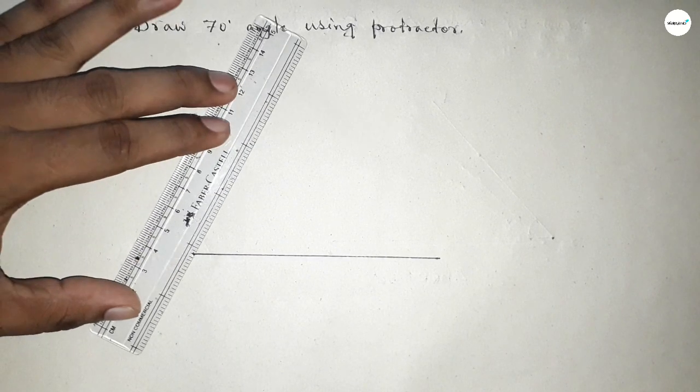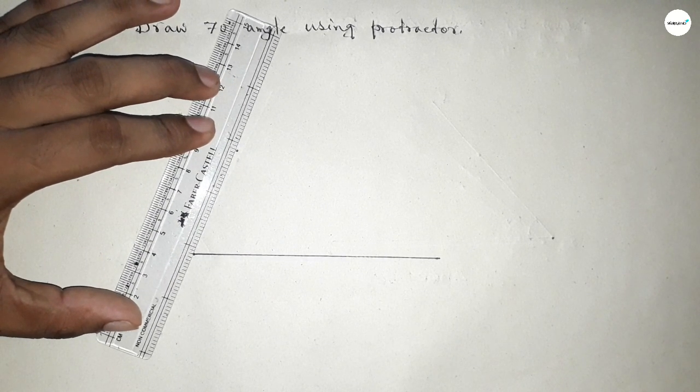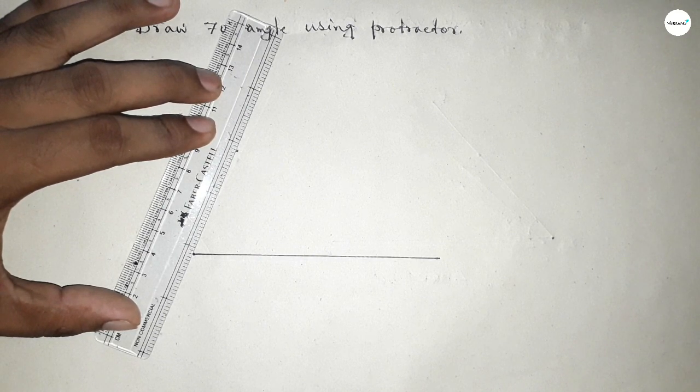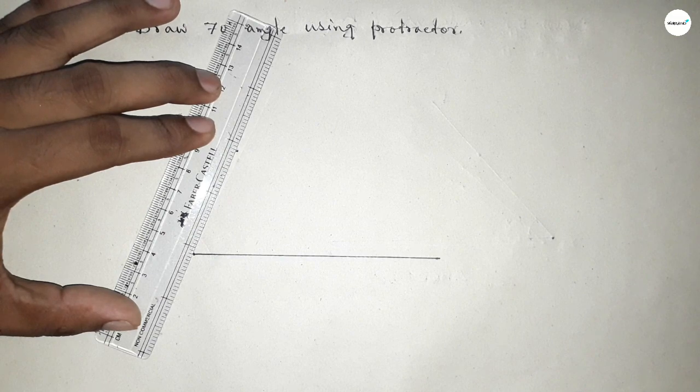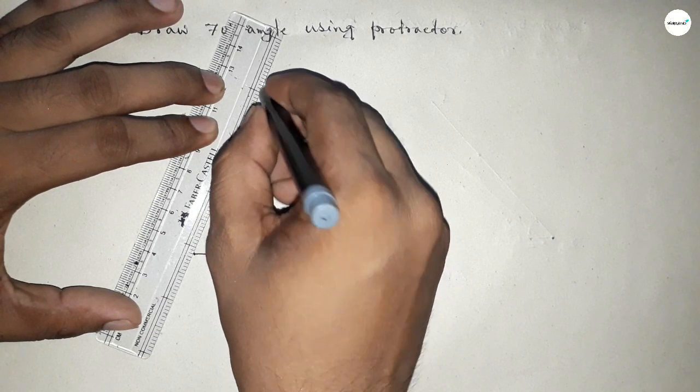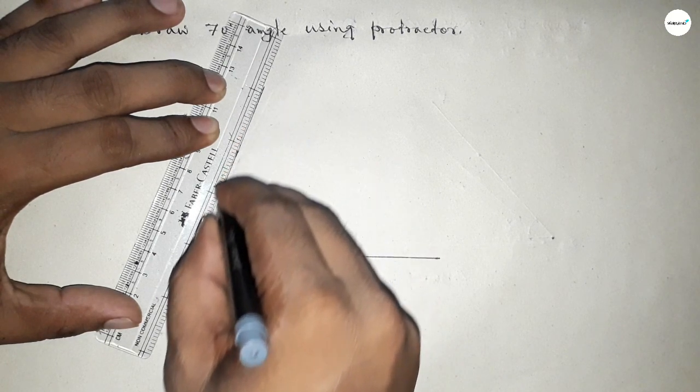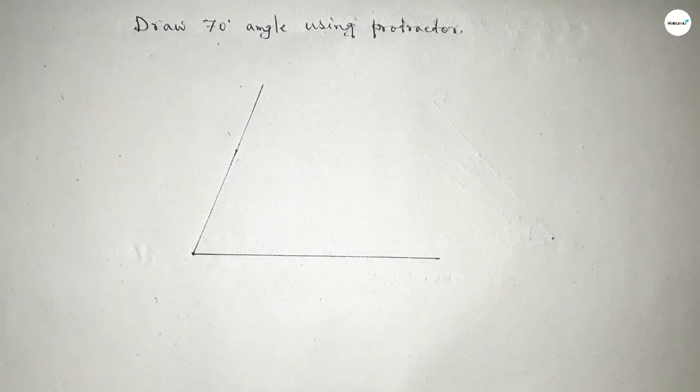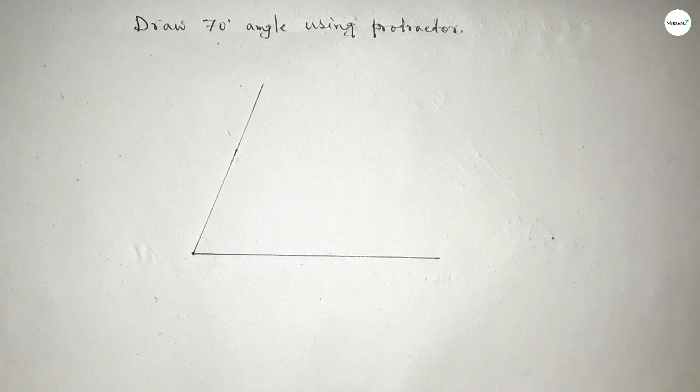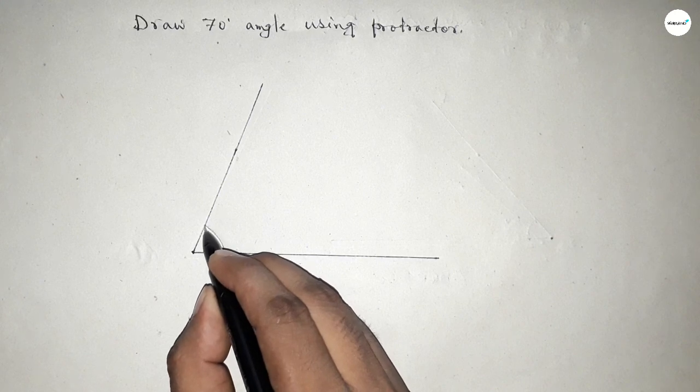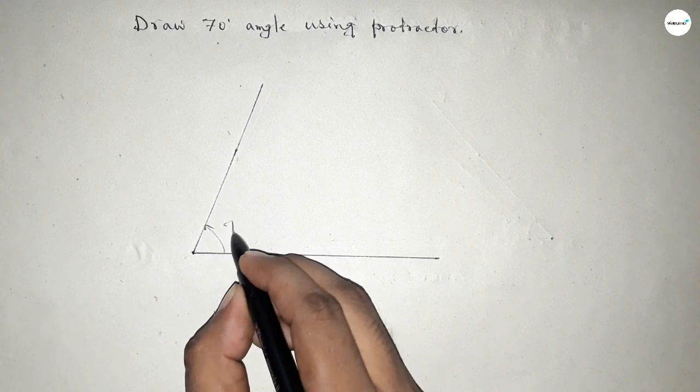Now joining this side to get 70 degree angle. So first joining this side to get the 70 degree. So we got 70 degree angle by joining this. So this is 70 degree angle.